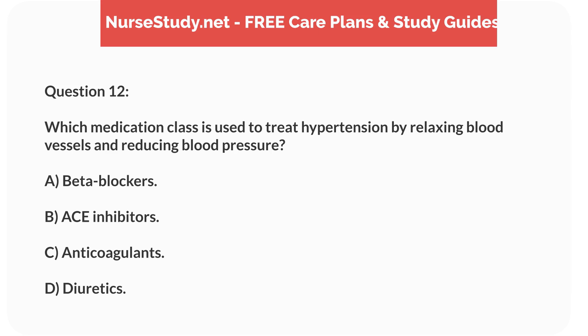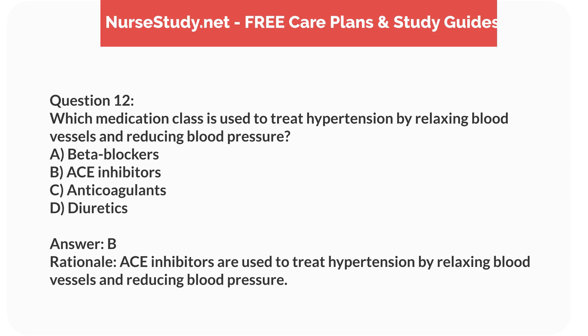Question 12. Which medication class is used to treat hypertension by relaxing blood vessels and reducing blood pressure? A. Beta blockers. B. ACE inhibitors. C. Anticoagulants. D. Diuretics. Answer: B. Rationale: ACE inhibitors are used to treat hypertension by relaxing blood vessels and reducing blood pressure.